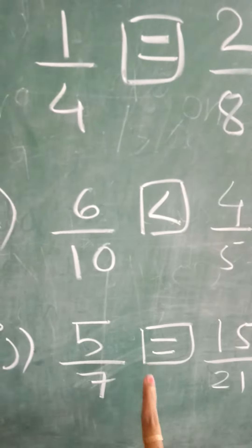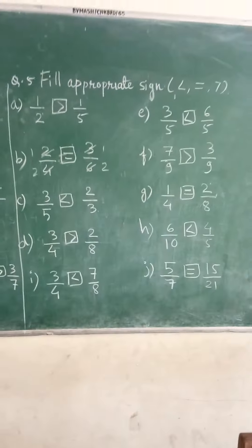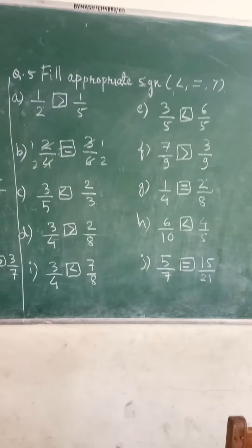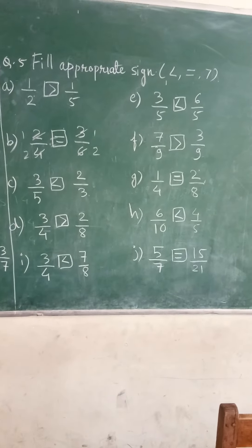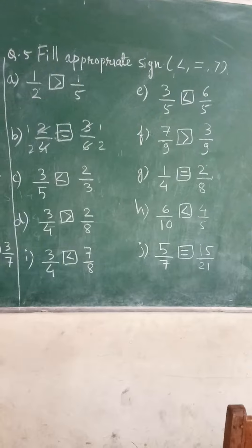So in this way you have to do it. Within 1 or 2 minutes you can put the sign. Just cross multiply, see which side has the higher value, and just put the sign.